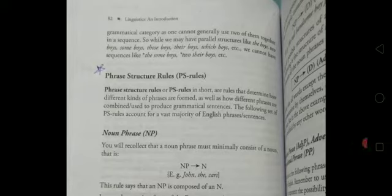In the syntactic literature, these are considered instances of the same grammatical category as one cannot generally use two of them together in a sequence. So while we may have parallel sentence structures like the boys, two boys, some boys, those boys, their boys, which boys, we cannot have sequences like the some boys or two their boys.